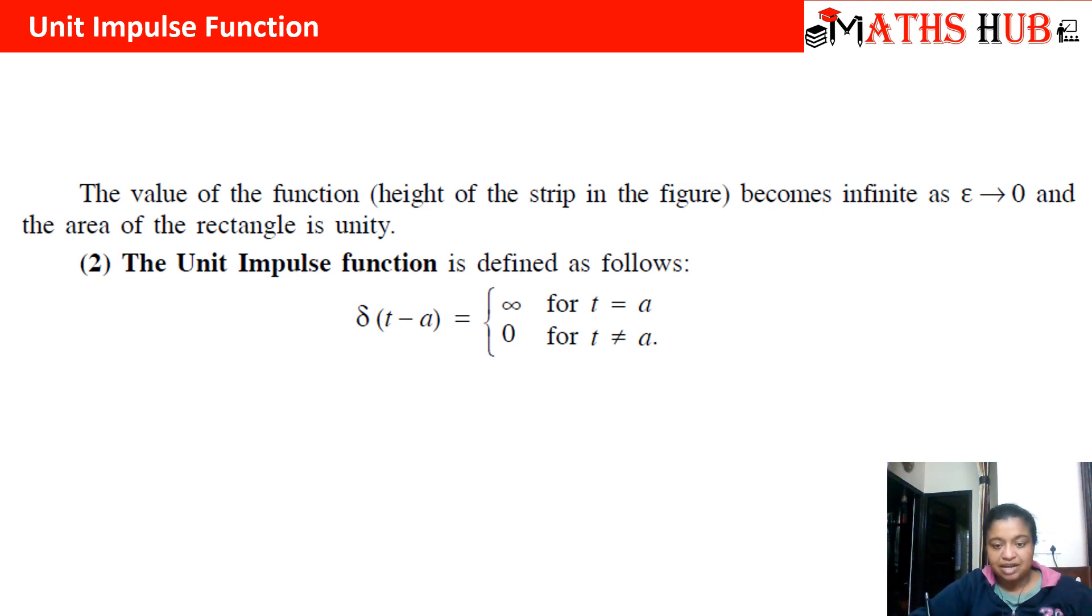This is what I was saying: when epsilon approaches to 0, then that rectangular portion that you saw in the last graph—this was the diagram. This point was a, this point was a plus epsilon, and this height was 1 by epsilon.